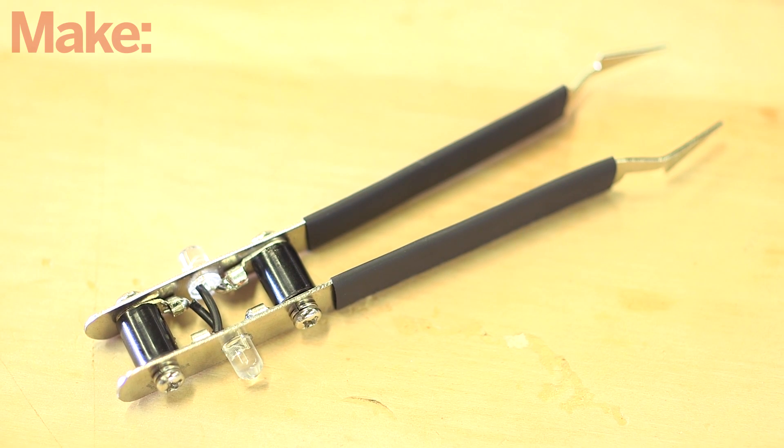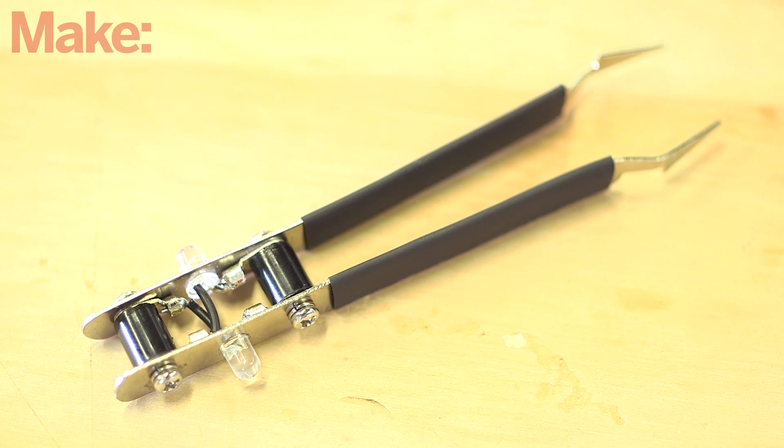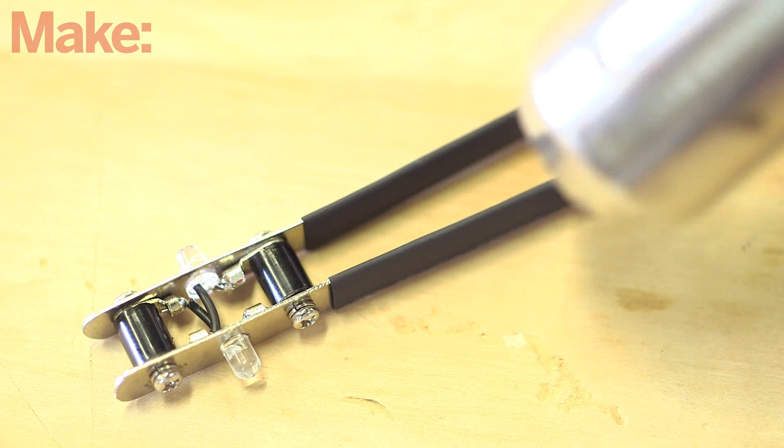Reattach the first jaw, tighten the screws down securely, then work a piece of heat shrink tubing over each jaw and apply heat to activate. Now you're set to test some batteries.